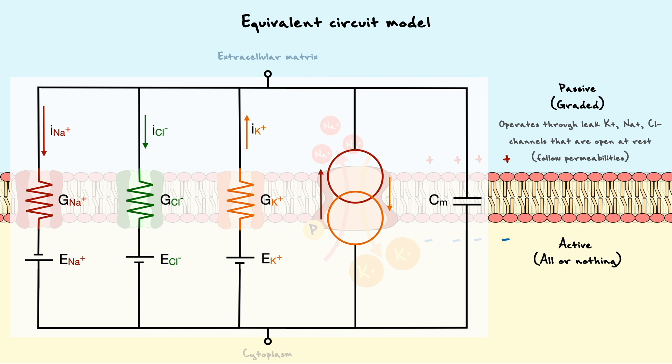On the other hand, the active all or nothing state operates through voltage-gated potassium and sodium channels that are only open at a specific threshold. Hence, you can see how this circuit can get a bit confusing because it does not discern between active and passive channels.